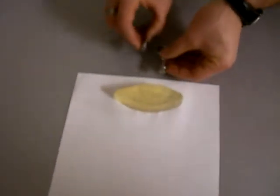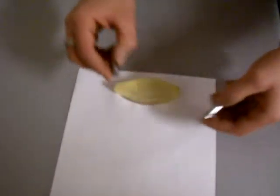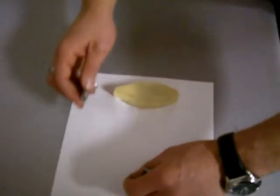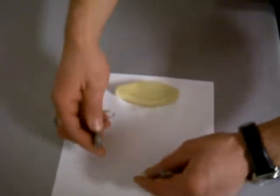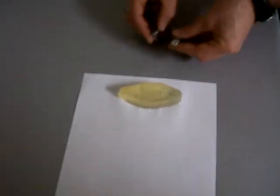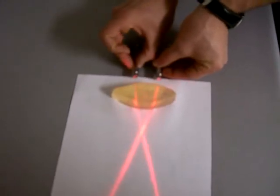For a convex lens, the light should converge and have a point where the light would cross. That point is called a fulcrum. Let's see what happens here.